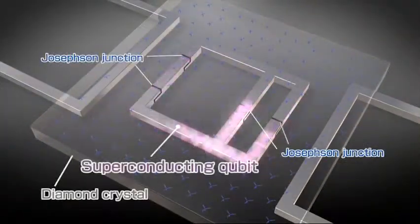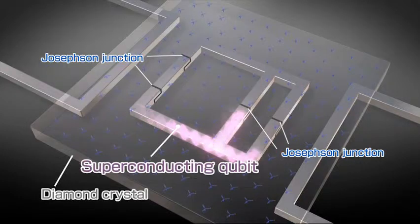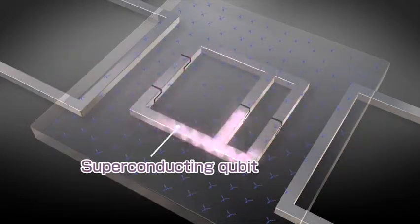A superconducting qubit is a relatively simple circuit comprising Josephson junctions. A current flows in a superconducting qubit from the beginning. This current represents the zero state.